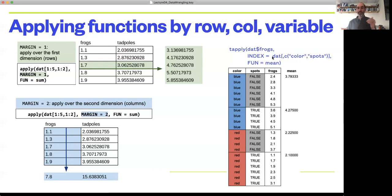But the difference is that the middle argument, instead of giving the margin of just an integer one or two or whatever, it's that you give it the other categorical variables you want to use to lump your data by. So in this case, we're going to give it both the color data and the spots data.